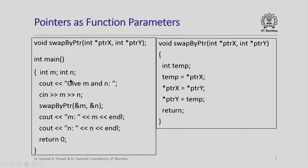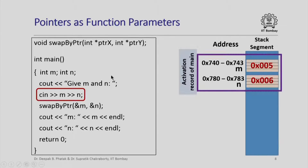Let us look at an example program where we pass pointers as function parameters. Here is the main program — it has two integer variables, I ask for their values and read them in, and then I call the function swap_by_pointer. Notice what I am passing as parameters: the addresses of the variables m and n. So I am basically passing pointers as parameters to swap_by_pointer. The declaration of swap_by_pointer must therefore specify that its formal parameters are integer pointers. When the main function is called by the operating system, the activation record of main is created in the stack segment.